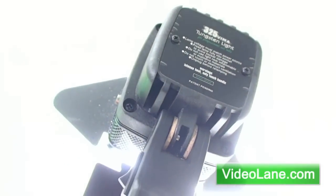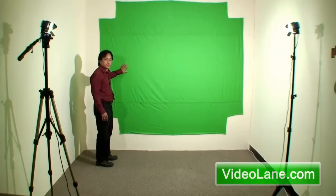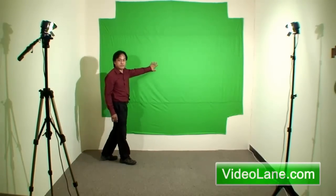The two lights are regular 300 watt camera lights. Direct the light roughly 45 degrees towards the center of the screen. What we want to achieve is to have even lighting across the green screen.